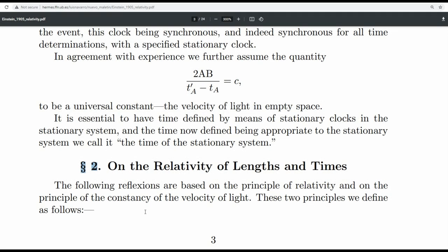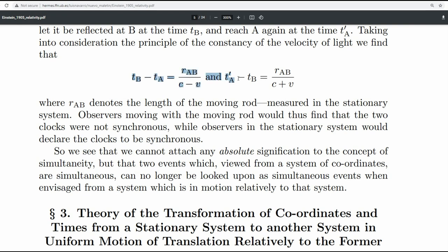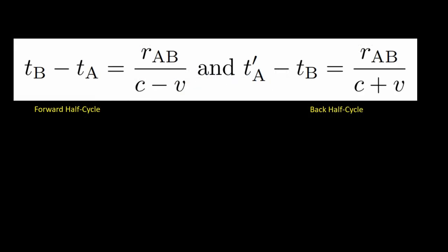Einstein creates the concept of relative simultaneity in section two of his paper. And these are the equations that Einstein uses to abolish absolute time. These are just distance equals rate times time equations.